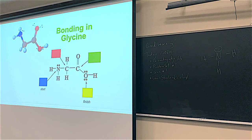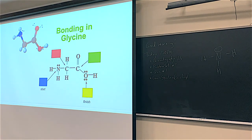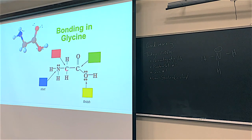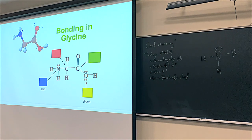Starting at the nitrogen in glycine and going clockwise to the oxygen: the nitrogen has three bonds and a lone pair, so the electron pair geometry is tetrahedral, and anytime you have tetrahedral the hybridization is SP3. The next carbon has four single bonds around it — electron pair geometry is tetrahedral, so it's SP3 as well.